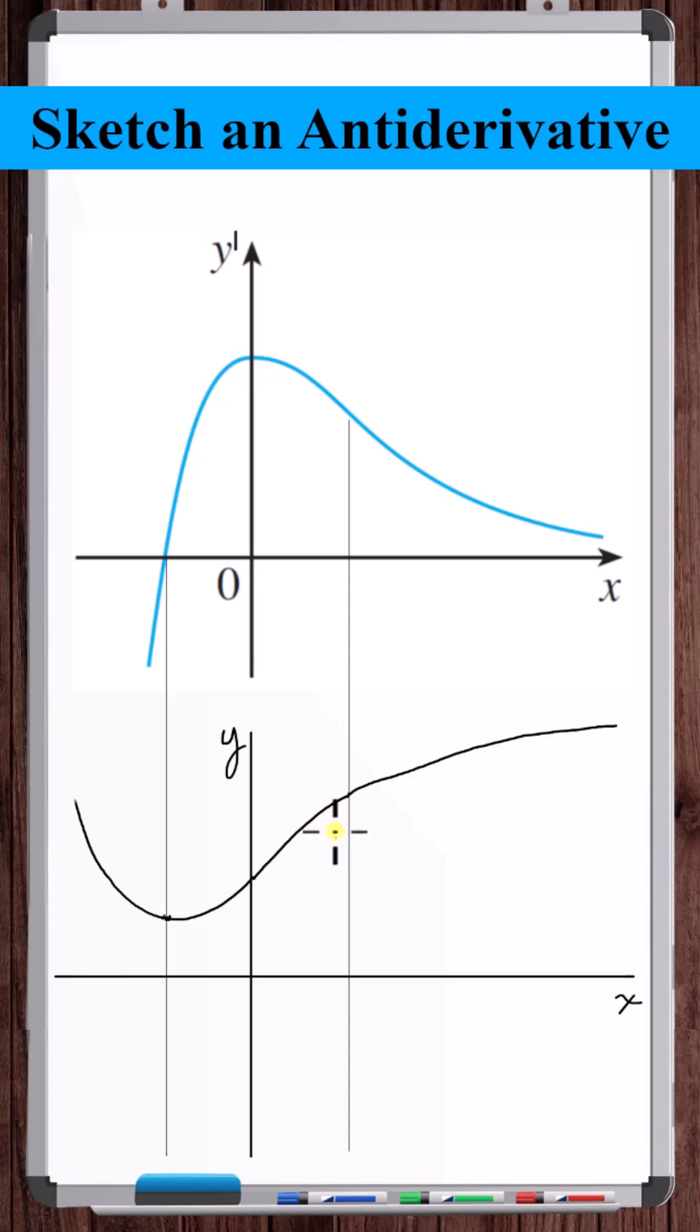And this is just one antiderivative. You can shift this curve anywhere up and down and it would still be an antiderivative of this function.